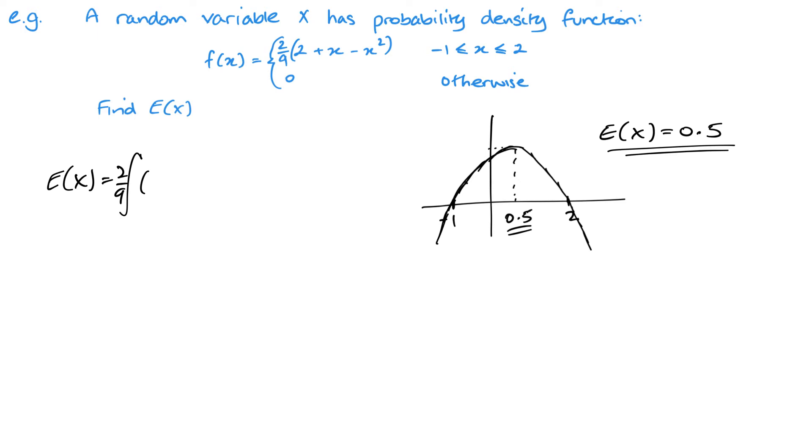We're going to integrate. I'm going to put the two ninths outside this time, and we're going to have 2x plus x squared minus x cubed when we multiply them all by x. Then it's between 2 and minus 1. This will give me again my two ninths outside, so I've got 2x squared over 2 plus x cubed over 3 minus x to the power 4 over 4. That will cancel.